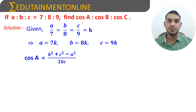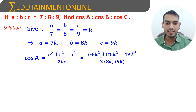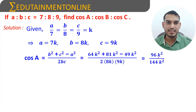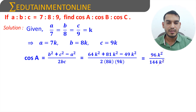From the cosine rule, cos A = (B² + C² − A²) / 2BC. Substituting the values: B² = 64k², C² = 81k², and A² = 49k², divided by 2 × 8k × 9k. So 64 + 81 − 49 = 96k² divided by 144k². k² cancels, giving 96/144 = 2/3.